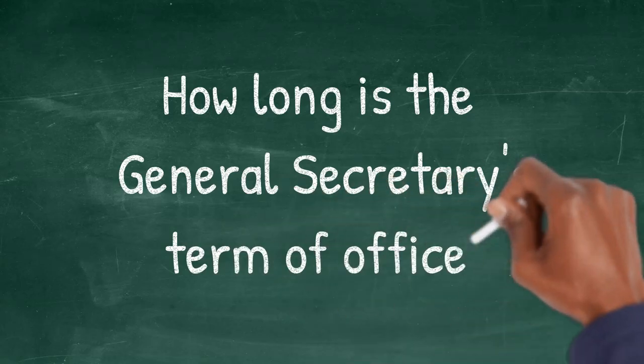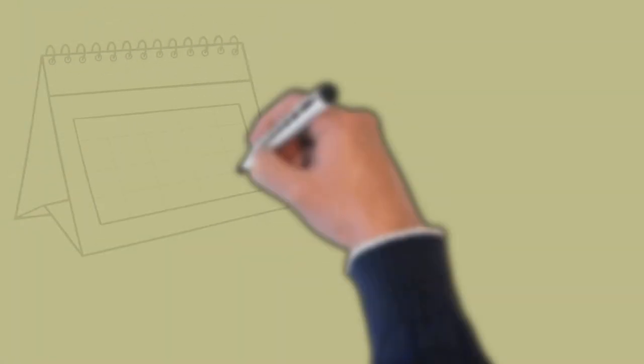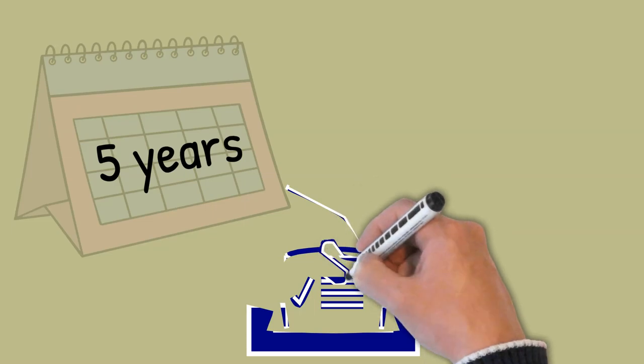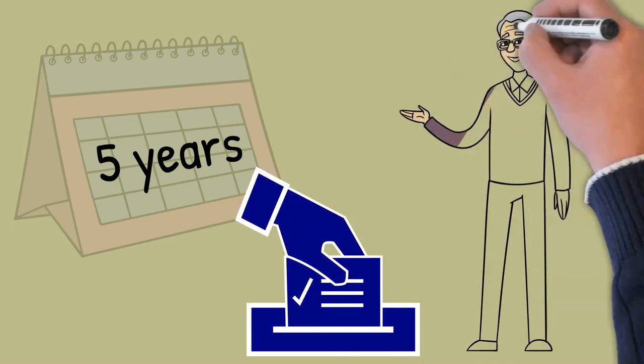How long is the General Secretary's term of office? The General Secretary is elected for a five-year term and may stand for re-election at the end of their term. They have to retire at the age of 65.